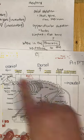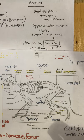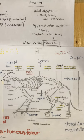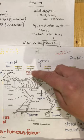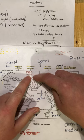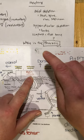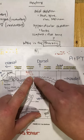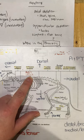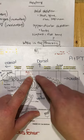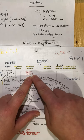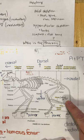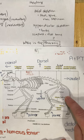Let's do a couple more examples. If I said: where are the ribs in relation to the thoracic vertebrae? The thoracic vertebrae is the anchor — the ribs are to the side, so they're lateral to the thoracic vertebrae. Similarly, the fibula is lateral to the tibia.